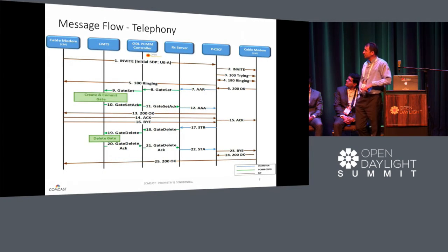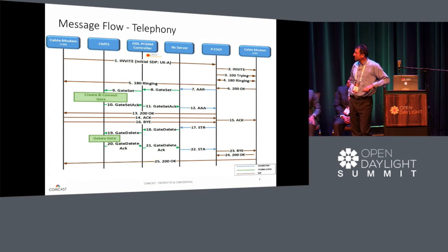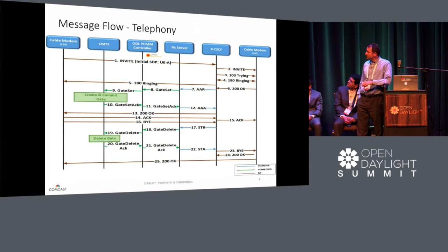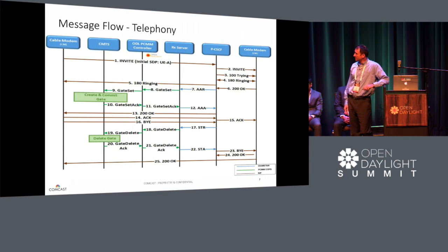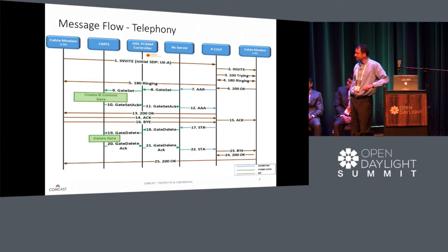Once received by the ODL PCMM plugin, requests are converted into policy rules and transferred over the PCMM COPS PR interface to the cable modem termination system, which applies the actual rule for a particular call. In this slide, you can see the actual message flow between various components in our network and the PCMM server. Upon receiving the diameter authorization and authentication request, it generates and sends a gate set request over to the CMTS, which creates the service flow for the call. The session termination request received from the PCSCF triggers gate delete messages, which are sent to the CMTS to clear the established service flow.